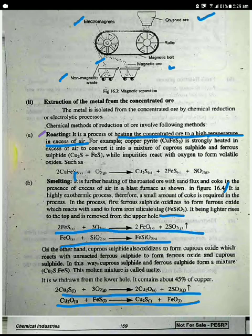Now see this reaction. Copper pyrite plus oxygen will give you copper sulfide plus iron sulfide and sulfur dioxide.